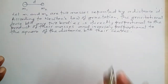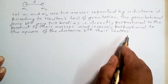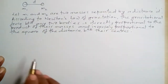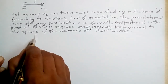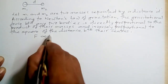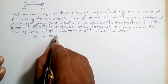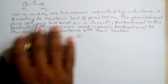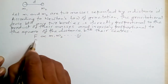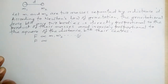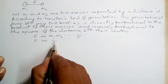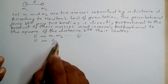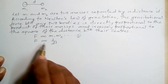Looking at this law given by Newton: the gravitational force between any two bodies is directly proportional to the product of their masses — that is the first part, giving us F proportional to M1 times M2, and this is equation number one. The second part says that the same gravitational force is inversely proportional to the square of the distance between their centers.